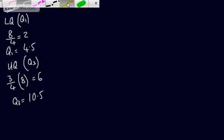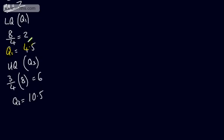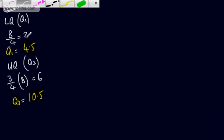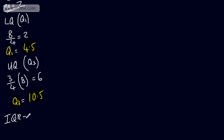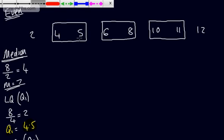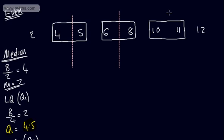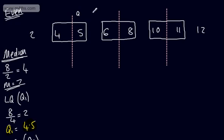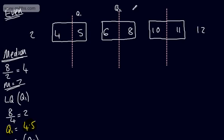So we now have Q1 = 4.5 and Q3 = 10.5. If we wanted to find the interquartile range, IQR = Q3 − Q1 = 10.5 − 4.5 = 6. We've essentially split the data so that a quarter of values fall below Q1, half below Q2 (the median), and three quarters below Q3.